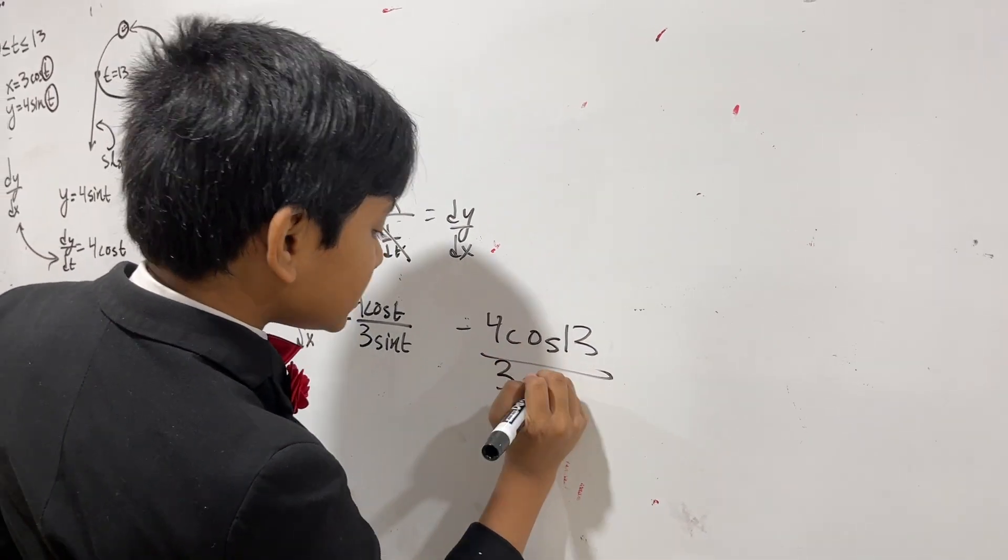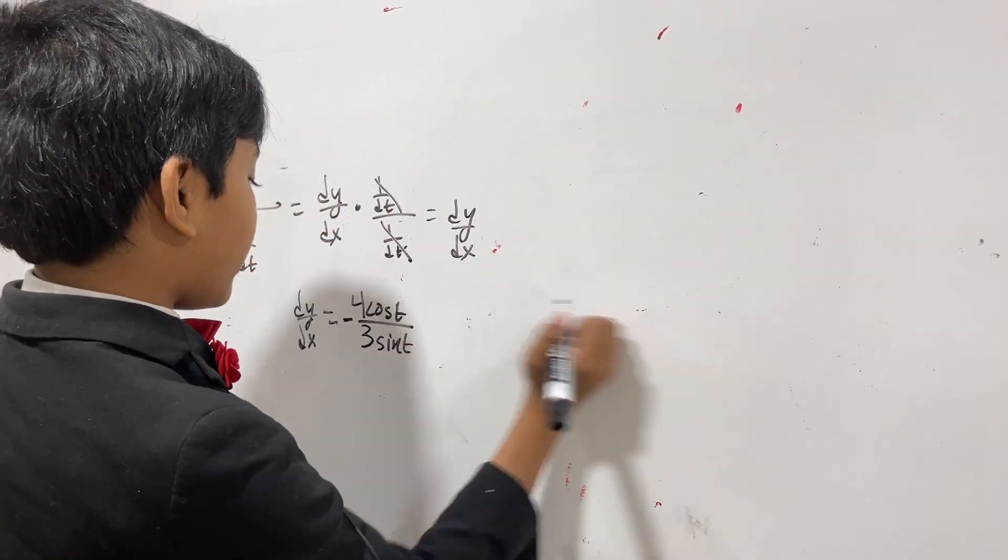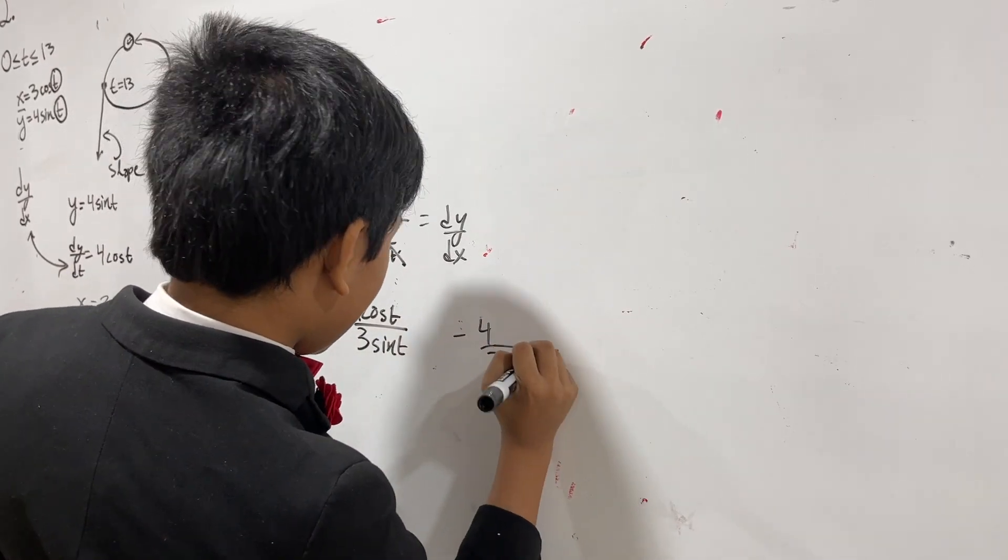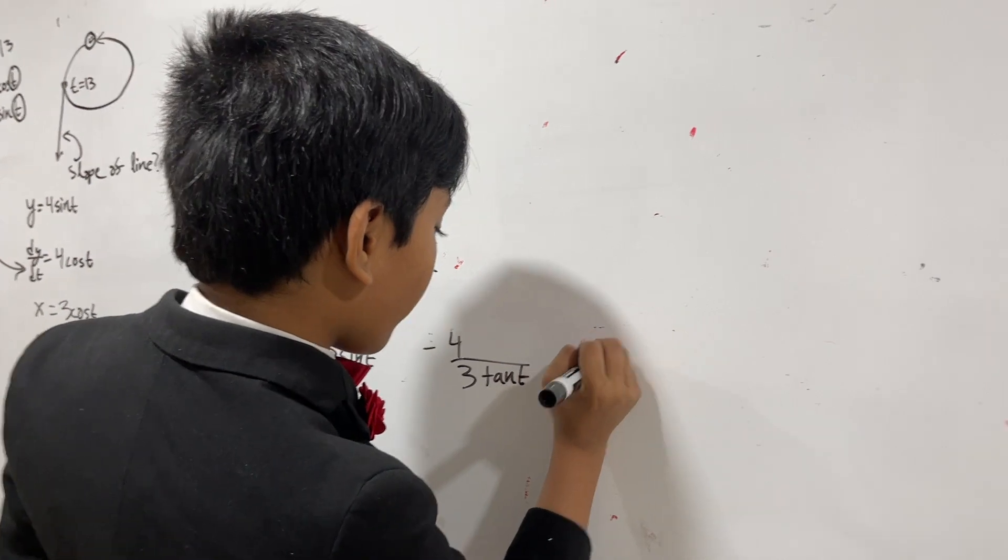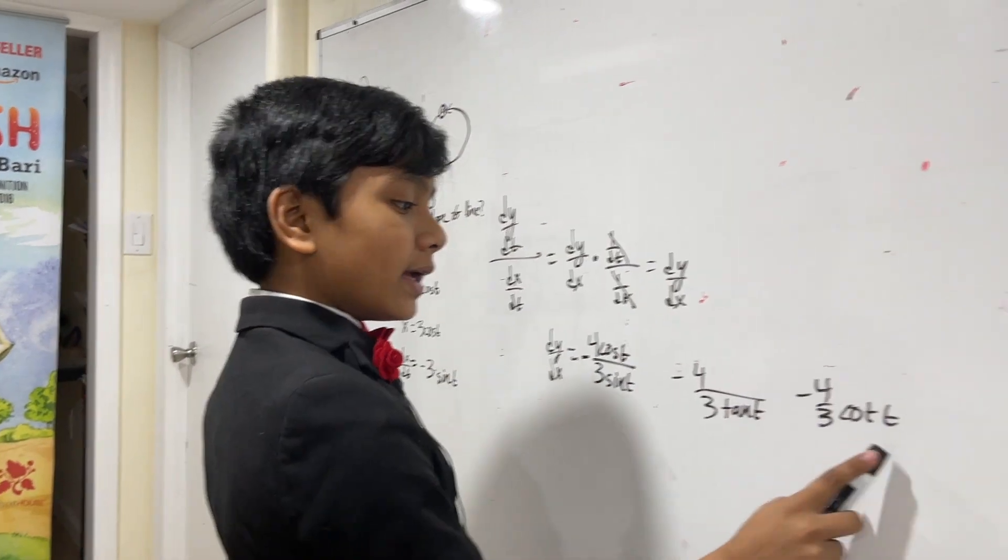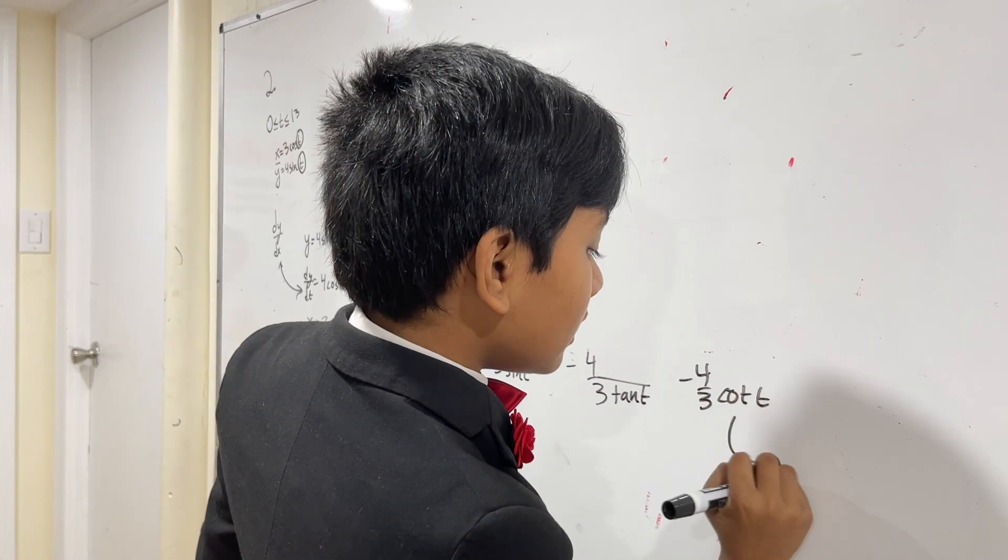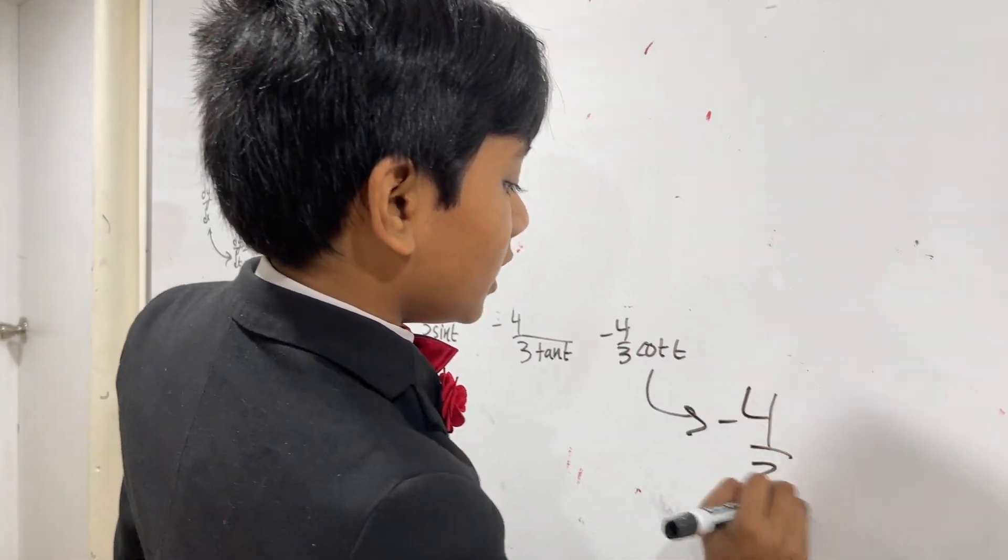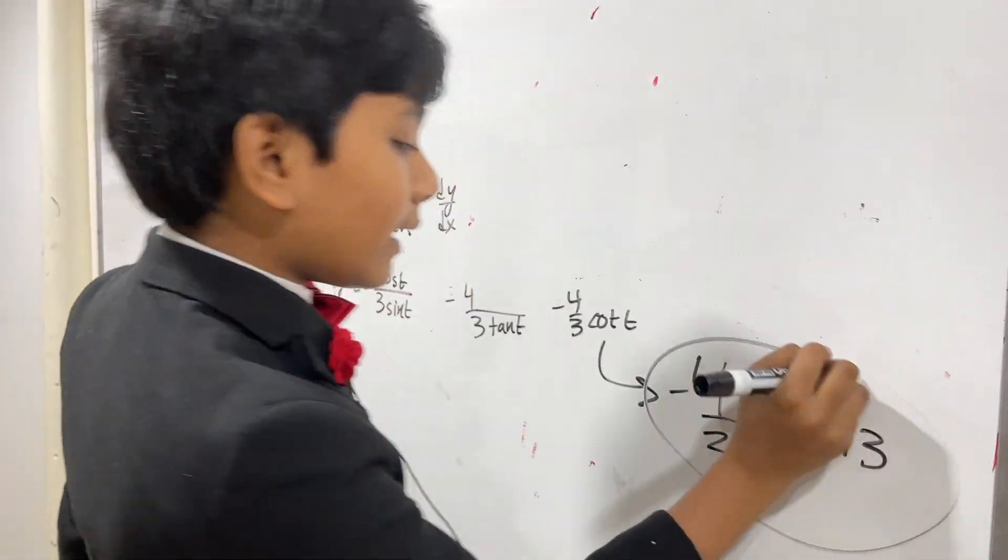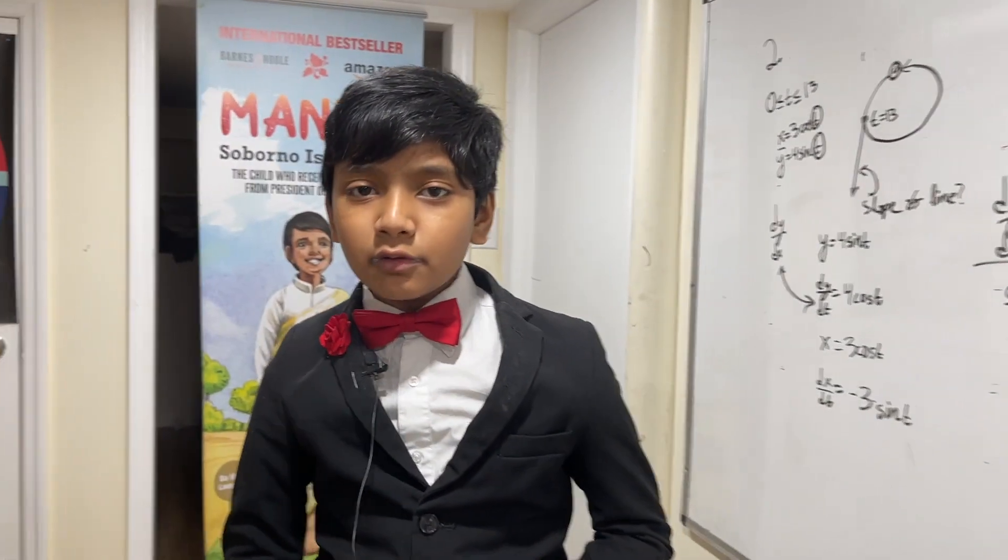We can actually simplify this to be minus 4/3 tan t, or minus 4/3 cot t. And then when we plug in, we get minus 4/3 cotangent of 13. That's it. Thank you everybody for watching. We'll see you in the next one. Hopefully you found that problem fun.